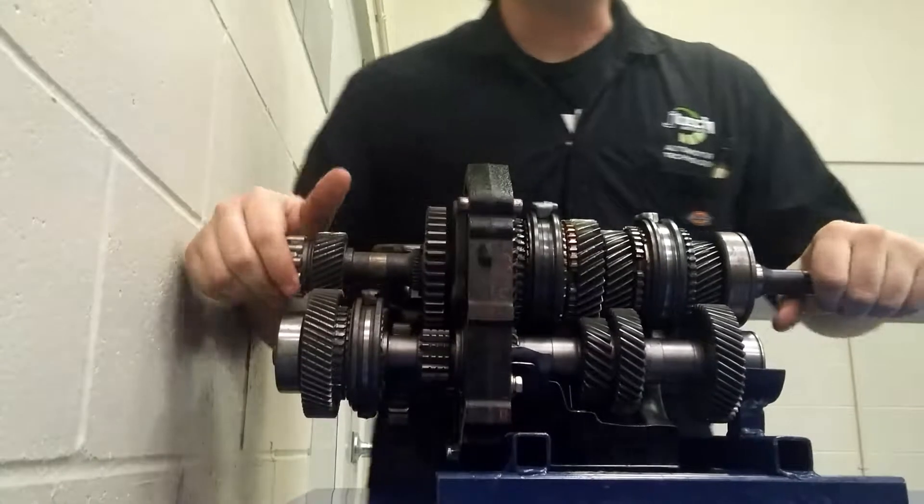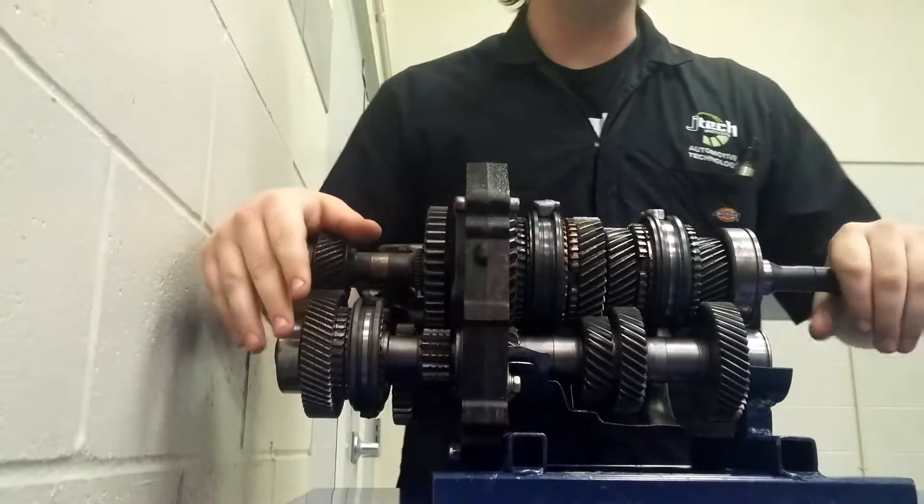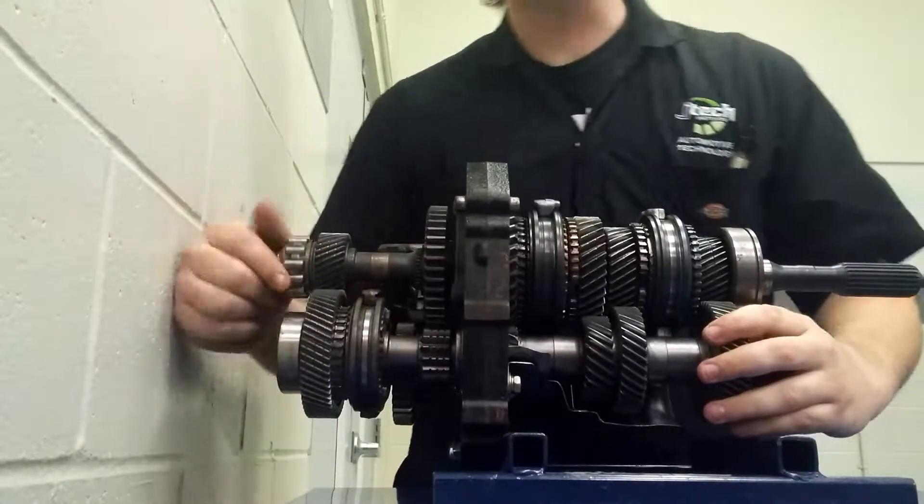It's pretty straightforward. On all your basic manual transmissions, you're going to have an input shaft, a counter shaft, and an output shaft.